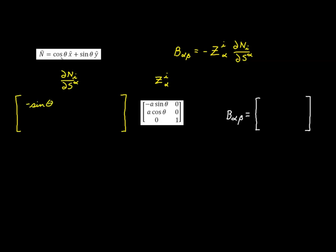The second component, n2, is sine theta, so the partial derivative with respect to theta is cosine theta. The third component is zero, so its partial with respect to theta is just zero. Going through each component and finding the partial derivative with respect to s2, which is z — in the case of the cylindrical surface, none of these components depend upon z, so all of these partial derivatives are equal to zero.